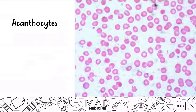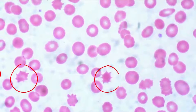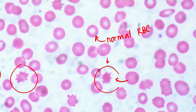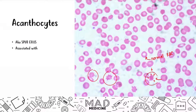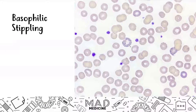Acanthocytes are also known as spur cells and they're associated with liver disease and abetalipoproteinemia. As you can see, they are not uniform like a normal RBC. You can see these spur-like projections — it kind of reminds me of the spurs on a cowboy boot. Another thing to notice is that these projections are not uniform; each projection is different from the others, and each acanthocyte looks different from the next.